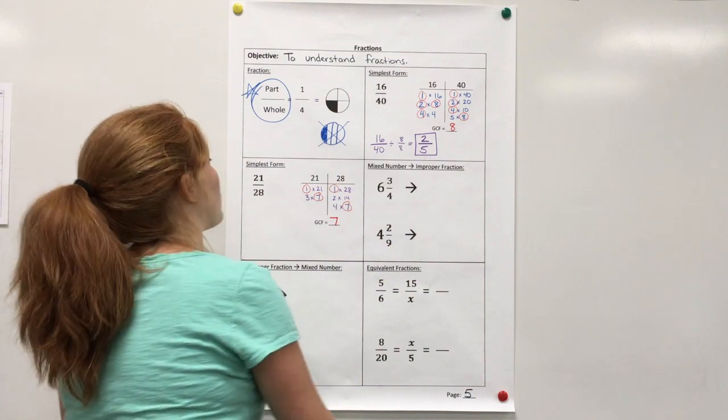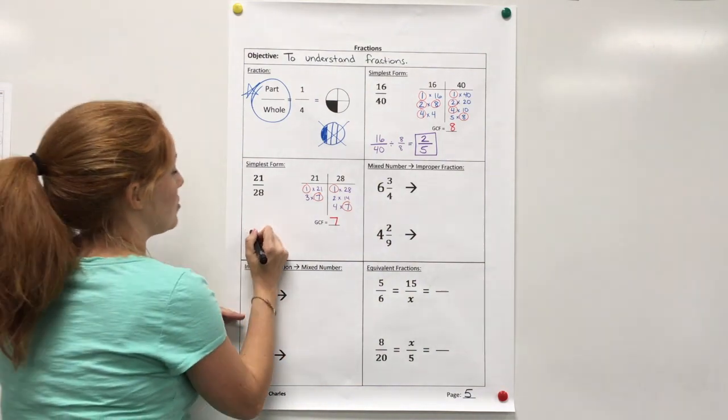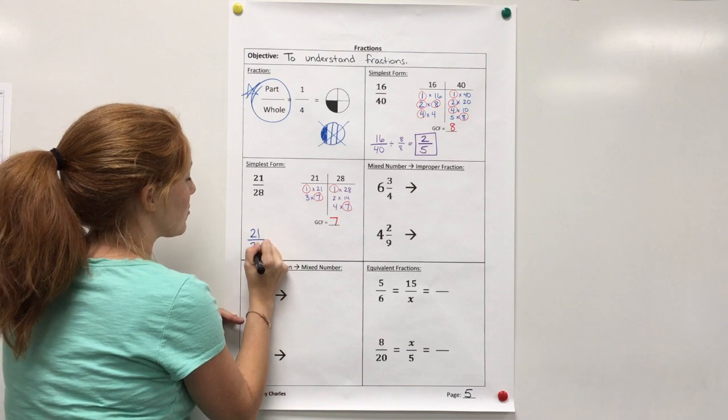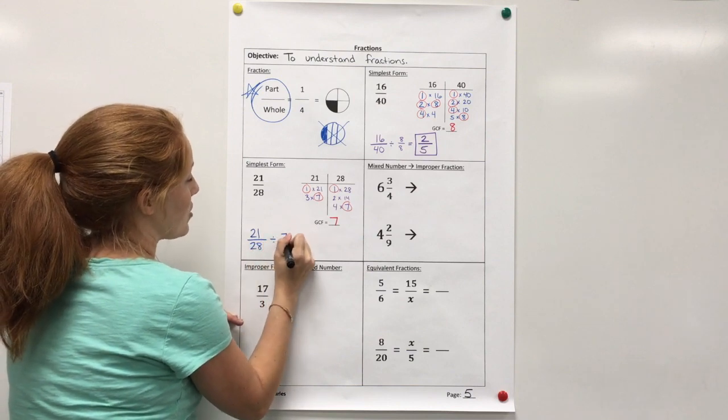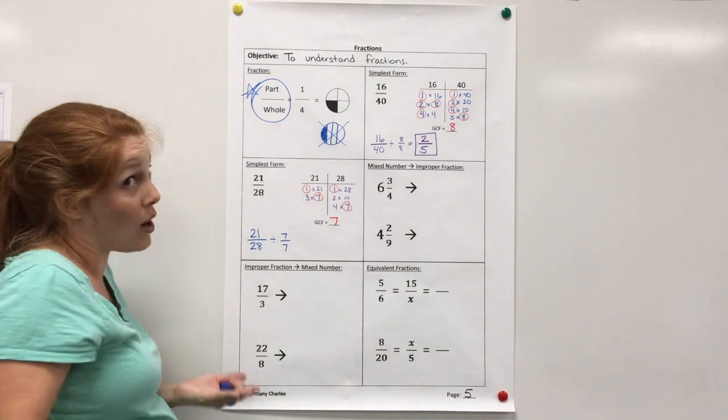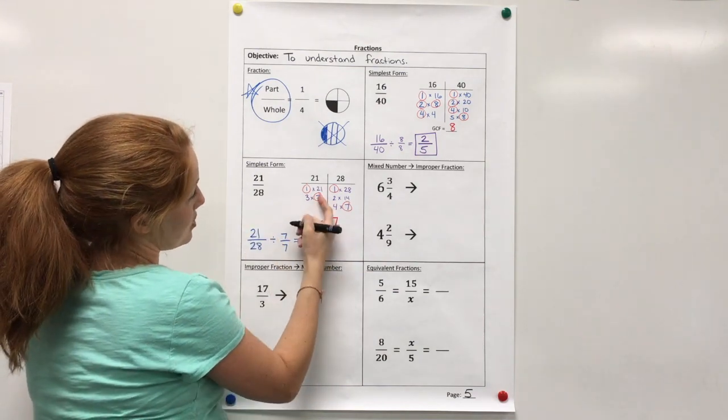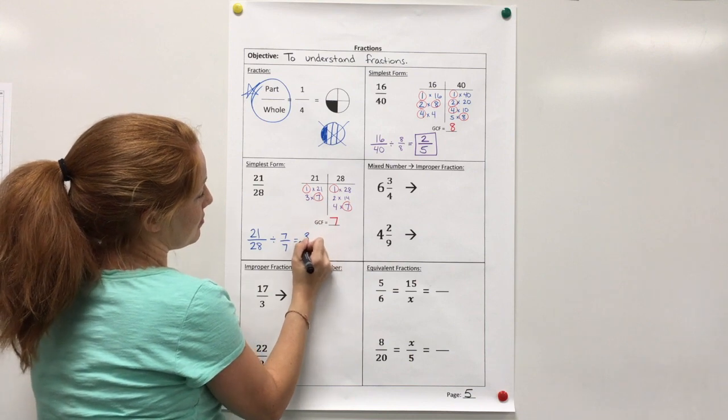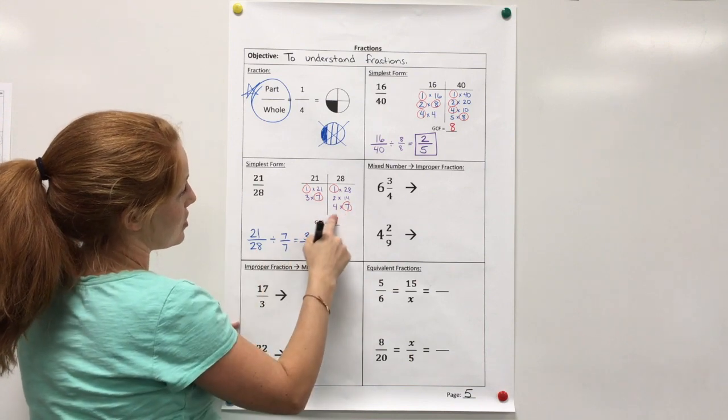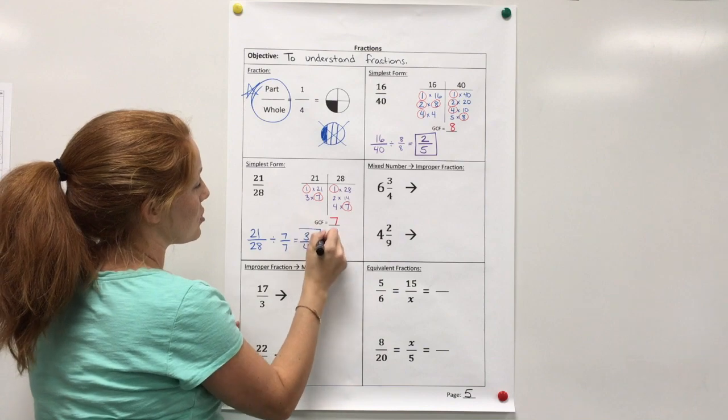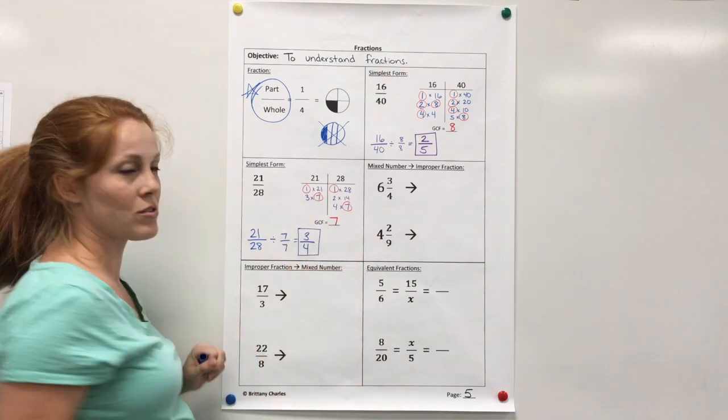And now I'm going to take my fraction. 21, 28. And divide by 7 over 7 or 1. 21 divided by 7 is 3. 28 divided by 7 is 4. So this fraction in simplest form is 3 fourths.